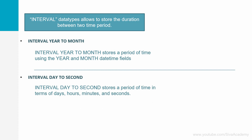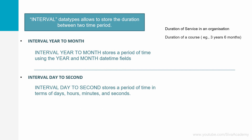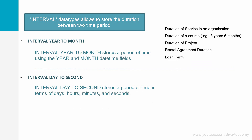Now let us see a few examples where exactly these two interval data types will be helpful. Interval year to month will be helpful to store a larger duration — for example, the duration of service in an organization, the duration of a course, a project, rental agreement, loan tenure, or subscription duration. In these cases, the duration will be quite large and we generally store it in terms of the number of years and months, so interval year to month will be very helpful.